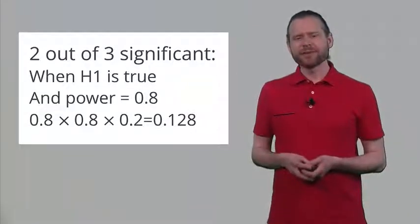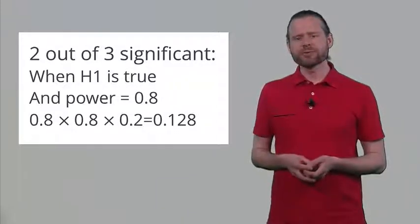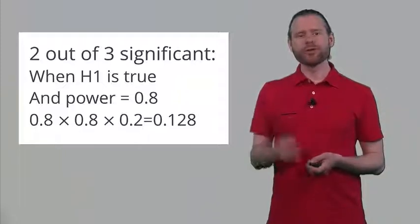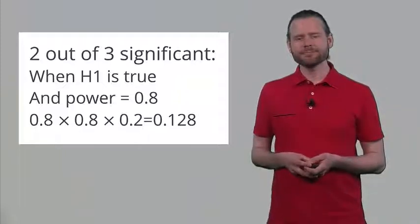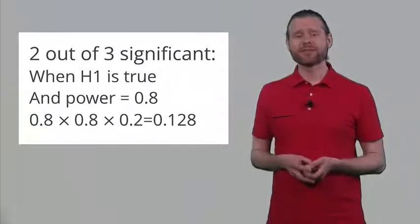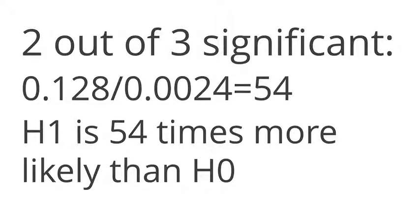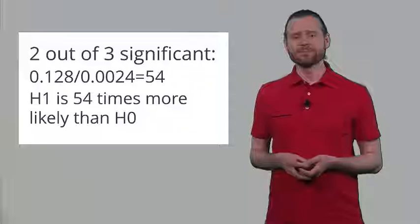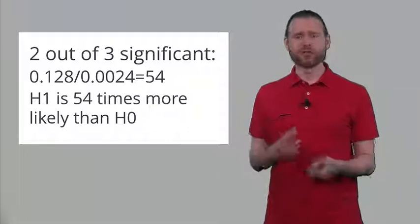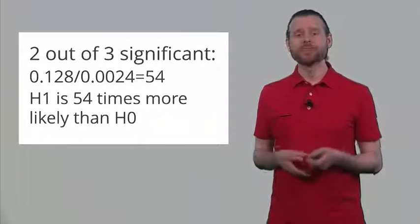So we can calculate the relative likelihood of observing 2 out of 3 significant results when either the null or alternative hypothesis is true. Based on these numbers, you can already see this outcome is much more likely when there is a true effect. Calculating the likelihood ratio, it's 54 times more likely that the alternative hypothesis is true than that the null hypothesis is true. It's possible to find this pattern when there is no true effect, but it's massively more probable when there is a true effect.